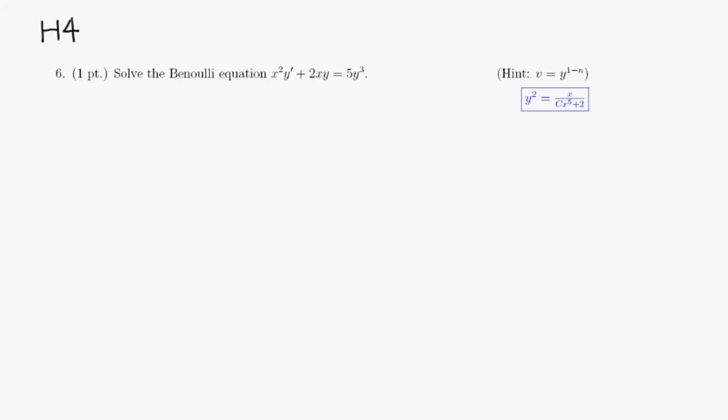Alright, let's look at homework number 4, problem number 6. Let's look at this Bernoulli equation. First thing I would like to do is get rid of this x squared so that it fits the standard form. So, divide through by x squared.